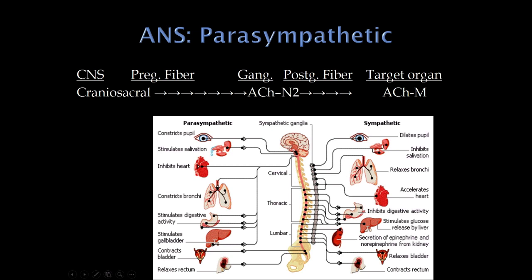For the parasympathetic system — for the pupil, salivary glands, heart, lungs, GI tract, bowel, and bladder — it's all acetylcholine being released but onto muscarinic receptors, not nicotinic receptors. This is really important because you can't understand the side effects of certain medications unless you realize this. Some medications block muscarinic receptors but not nicotinic receptors. When you think of parasympathetics, the target organ action is always acetylcholine on muscarinic receptors.